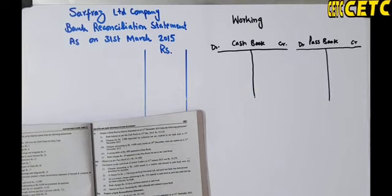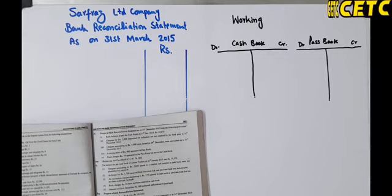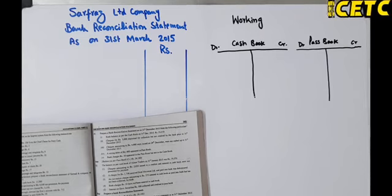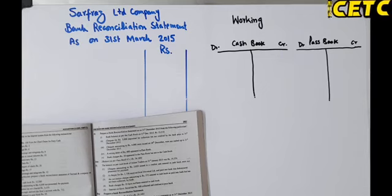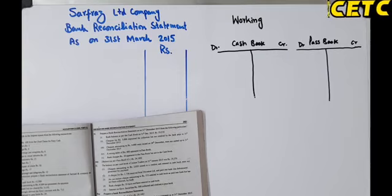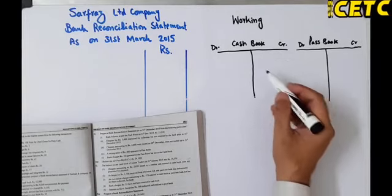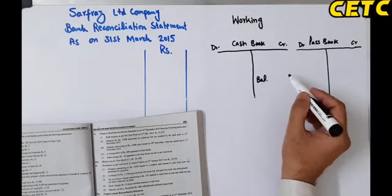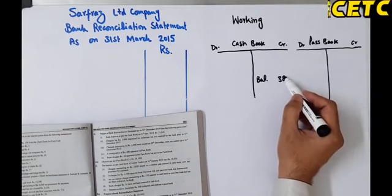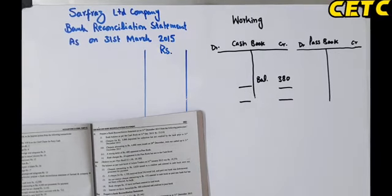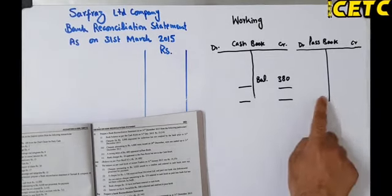According to the cash book of Sarfraz Limited, the company has a balance at the bank of rupees 3800 on 31st March 2015, but this did not agree with the bank statement on the same date. The cash book balance is Rs. 3800 — since nothing else is stated, we take it as a favorable (debit) balance. When compared with the pass book, the two did not tally.